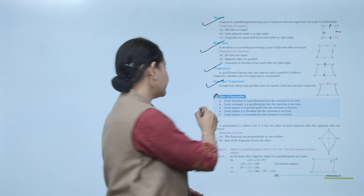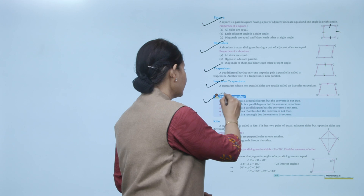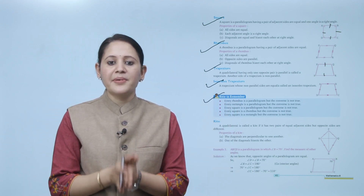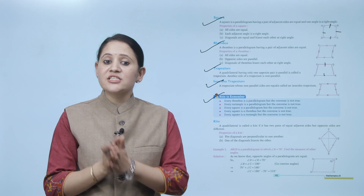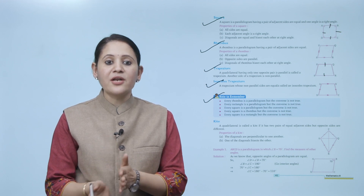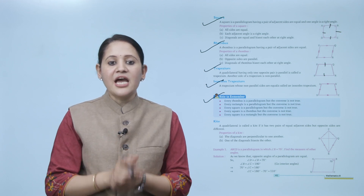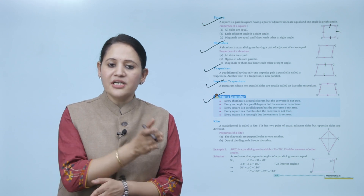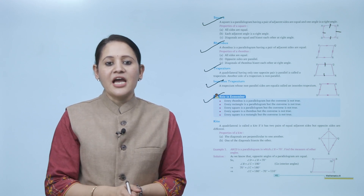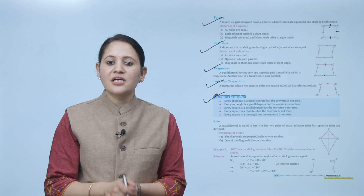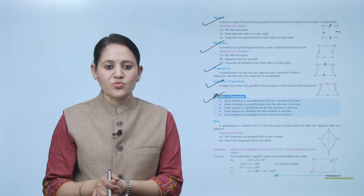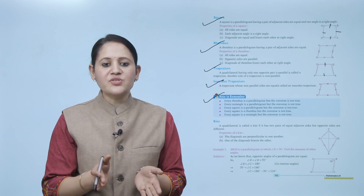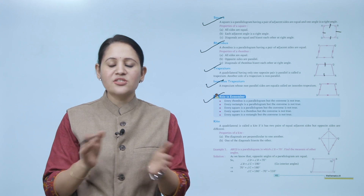Note to remember: every rhombus is a parallelogram but the converse is not true — not every parallelogram is a rhombus. Every rectangle is a parallelogram but the converse is not true. Every square is a parallelogram but the converse is not true. Every square is a rhombus but the converse is not true. Every square is a rectangle but the converse is not true.